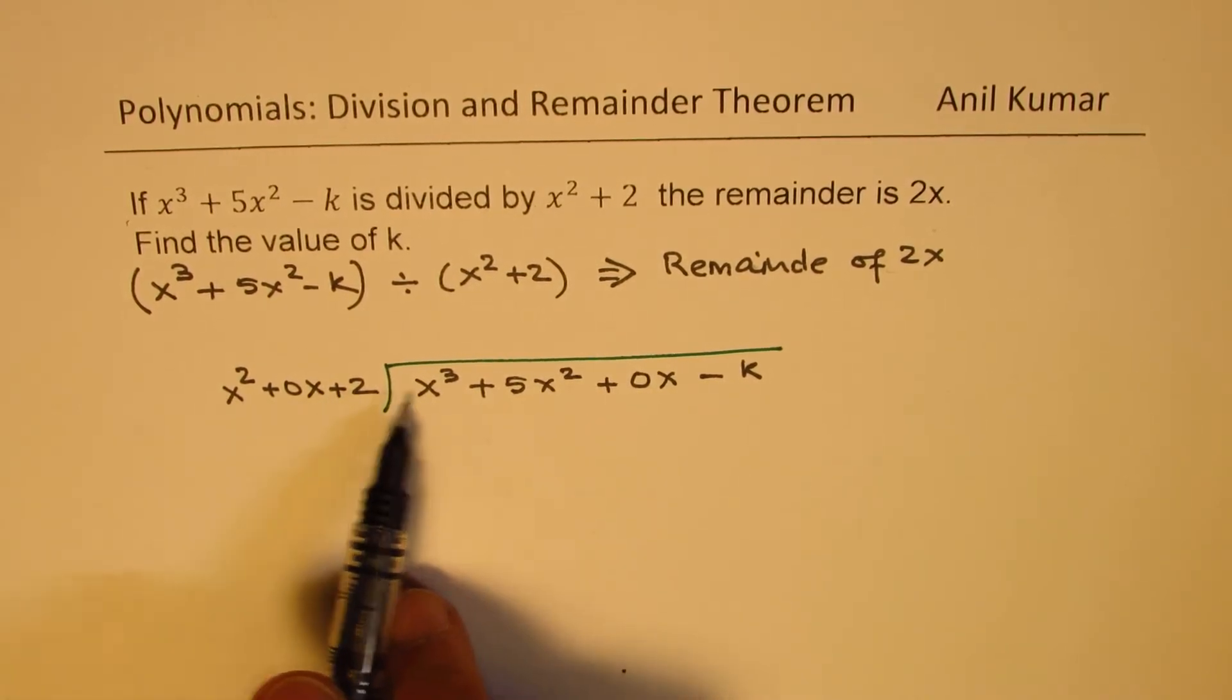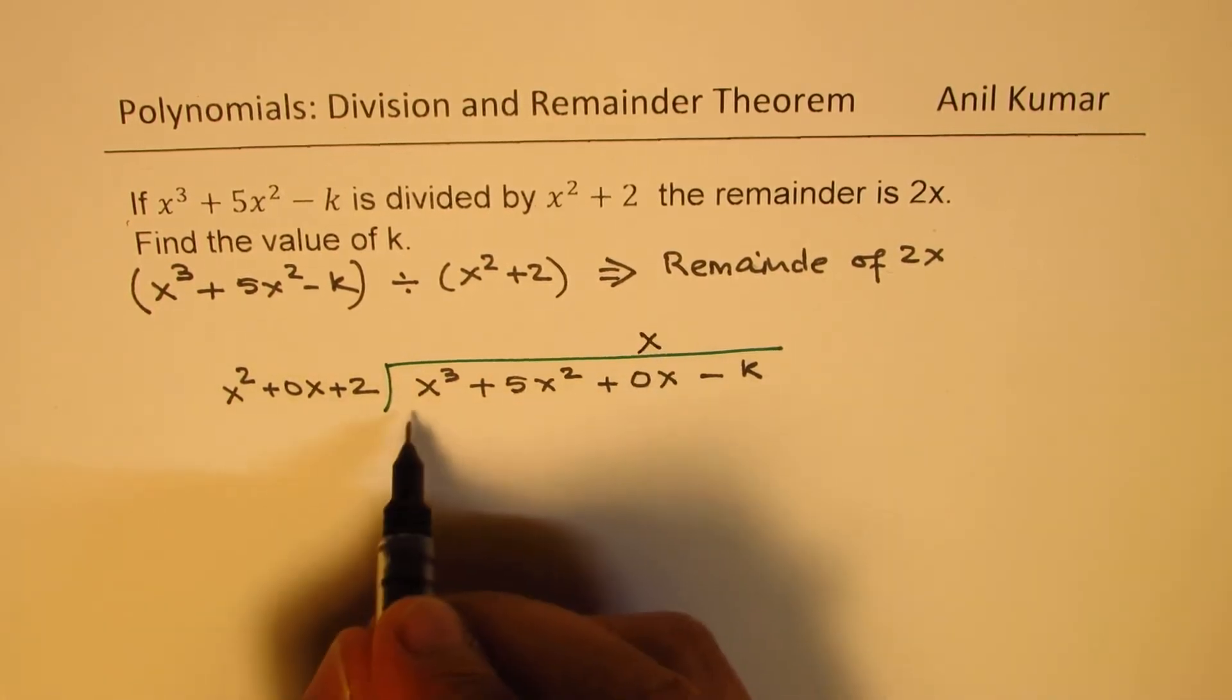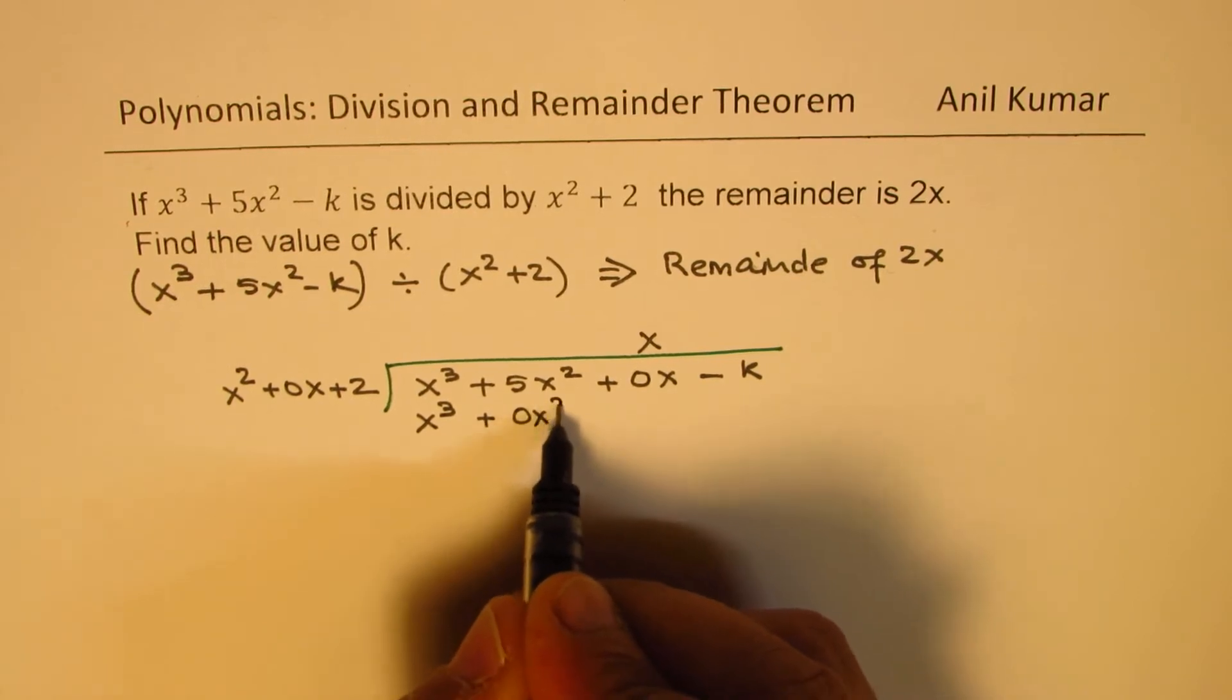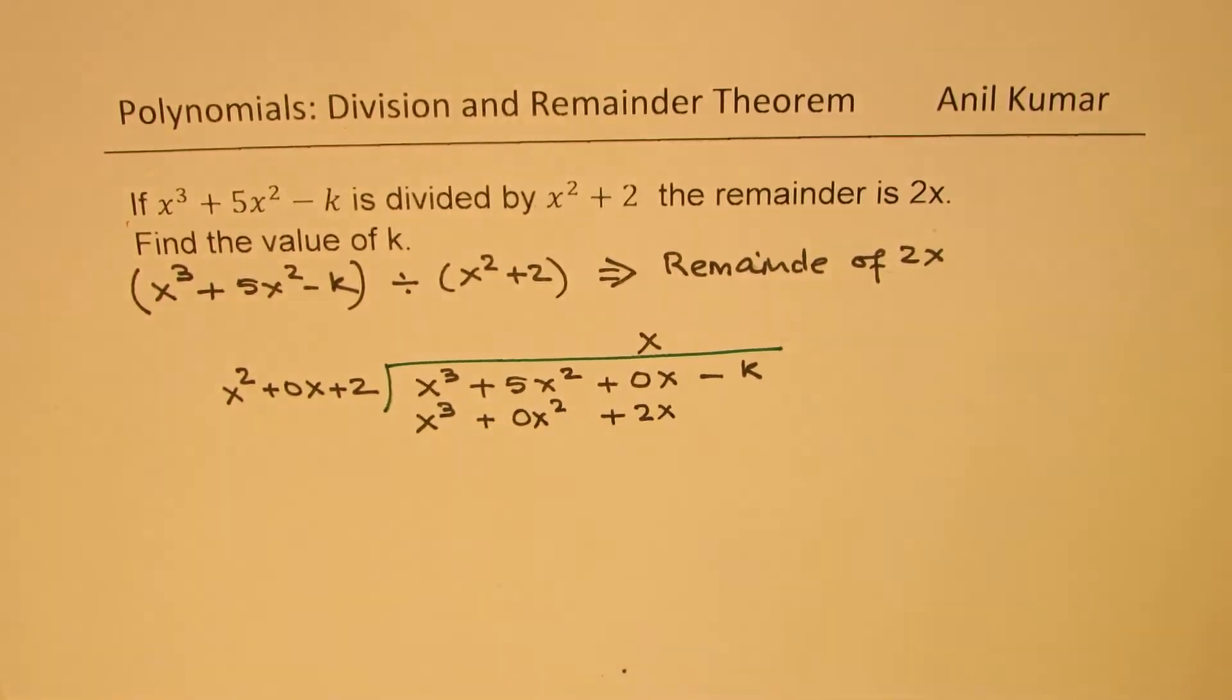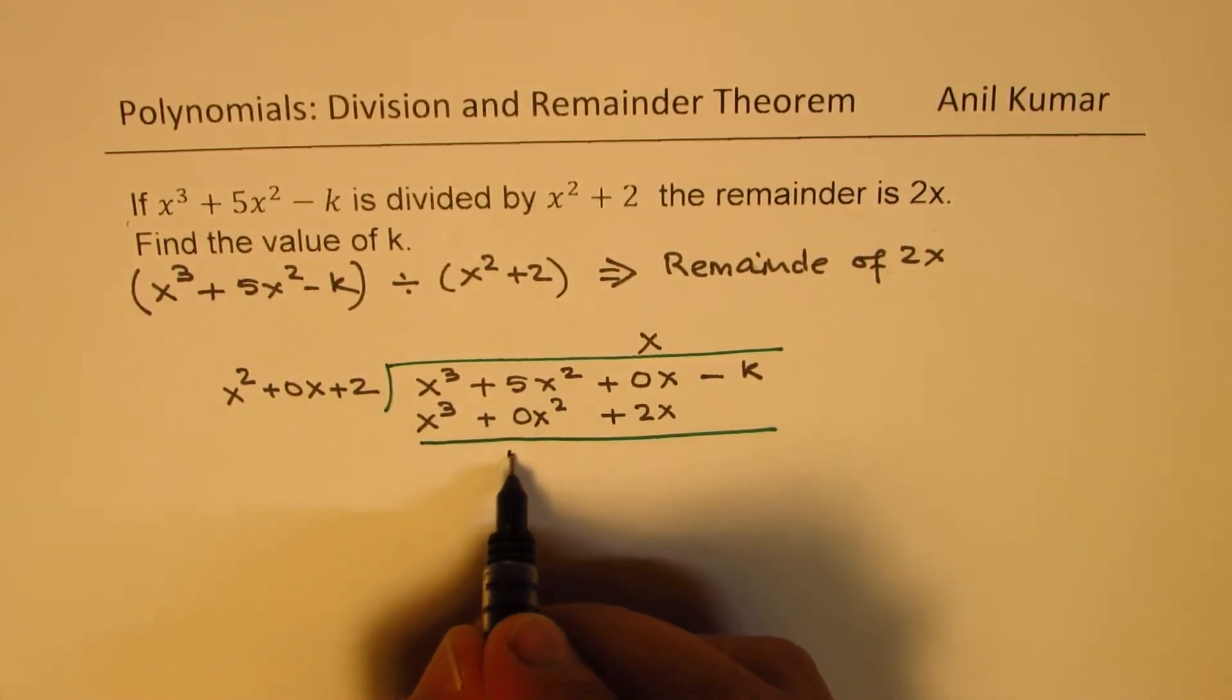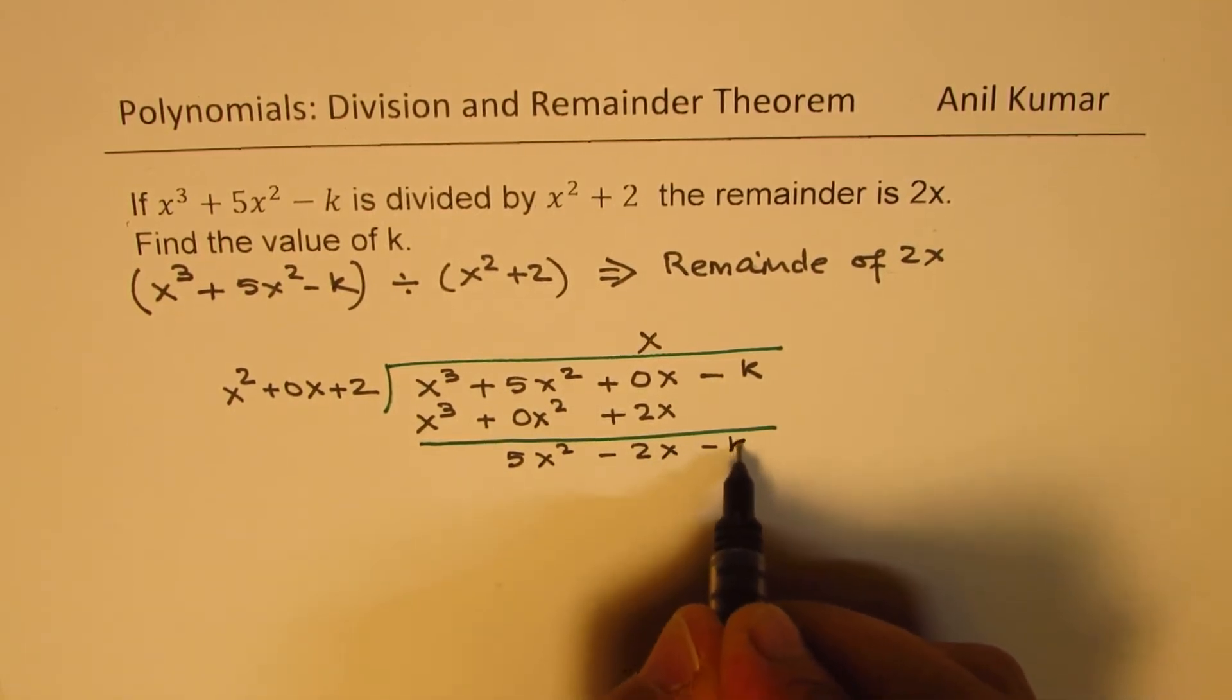Now, this is a trinomial, so we'll take three terms. Multiplying by x, we get x cubed plus 0x squared plus 2x. And when you take away, you get 5x squared minus 2x minus k.